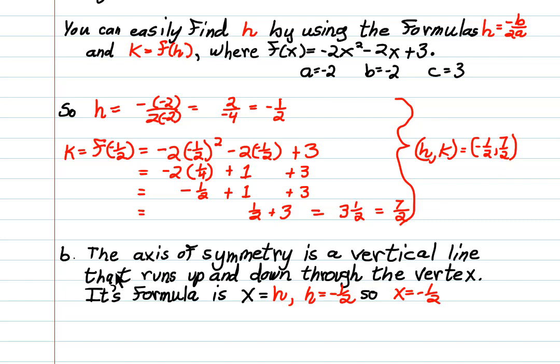Now we're being asked to find in part b the axis of symmetry. The axis of symmetry is a vertical line running up and down through the vertex. It has a formula x equals h. Well, we already know what h is—h is negative 1 half. So x equals negative 1 half is the equation of the vertical line that runs through the vertex.